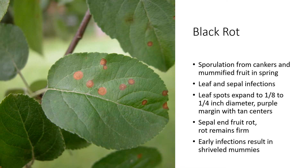The Black Rot pathogen will sporulate primarily from cankers in the spring or from mummified fruit still hanging on the tree. Early in the spring, as temperatures reach optimal conditions, spores will be produced. Some of the first infections occur on newly emerging leaves and the sepals on the bottoms of newly emerging fruit. Leaf spots stay generally small — an eighth to a quarter of an inch diameter — typically with a purple margin and tan centers that make them look like the eye of a frog.